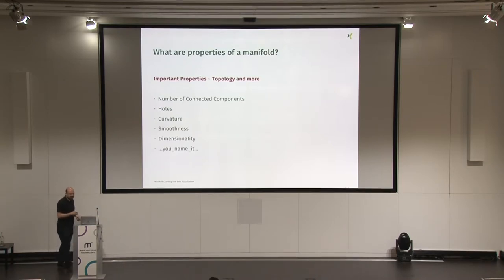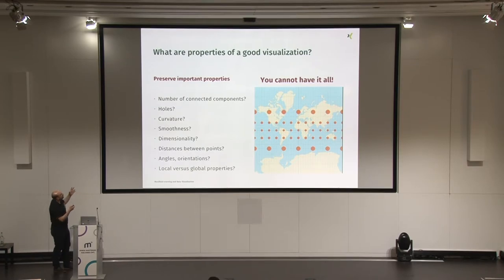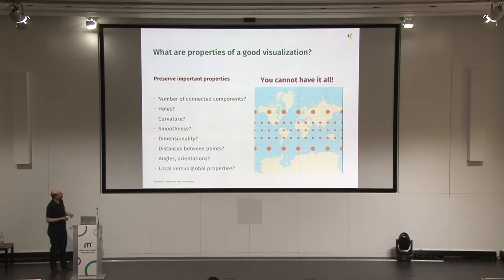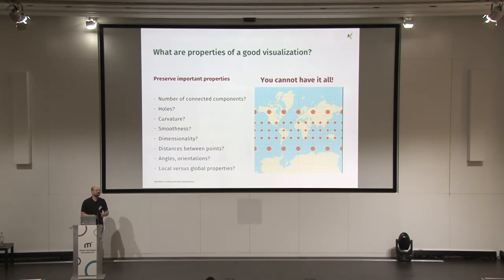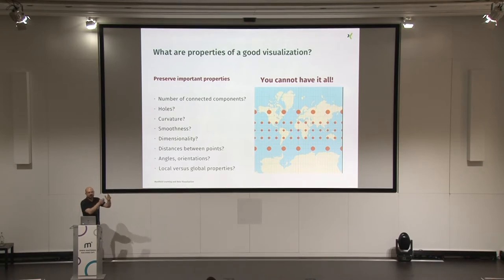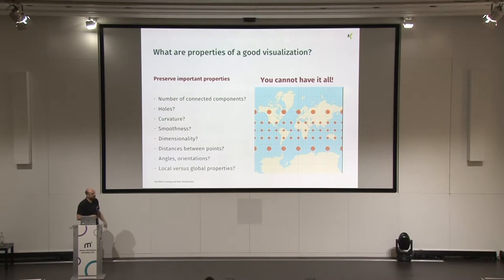When we work with data, we want to visualize it, and we need to understand what kind of properties a good visualization should have. Here is the Mercator projection of the Earth. It's basically: you take the ball of the Earth, put it in a cylinder, project onto the inner surface of the cylinder, and then roll it out. Strange things happen — for example, the south pole becomes a line at the bottom, even though it's just one point.